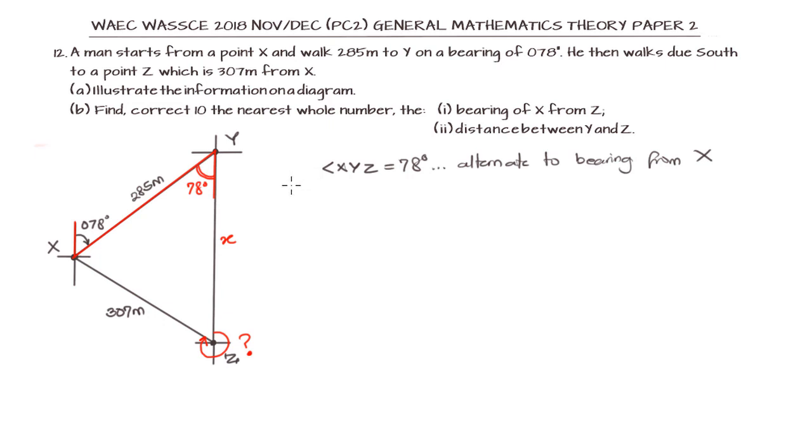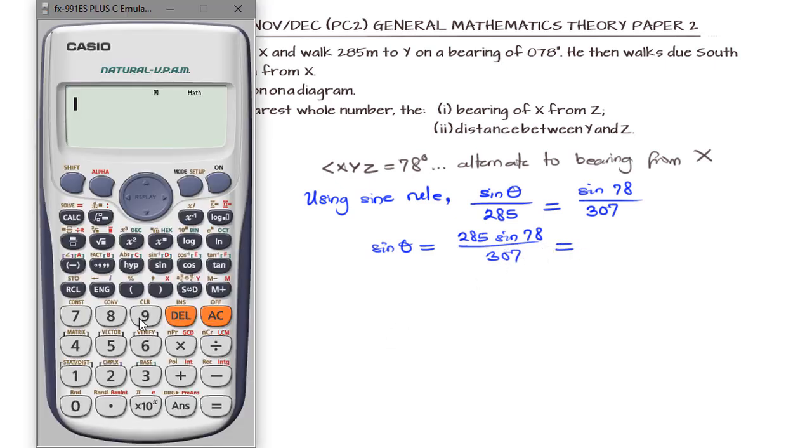You can notice a triangle here in which we can make use of the properties of a triangle. We are looking for the angle shown in blue at point Z. Let's call that theta. We know the side that theta is facing, and we know another angle and the side that angle is facing. This is the perfect fit for the sine rule. So sine theta over 285 equals sine 78 over 307.